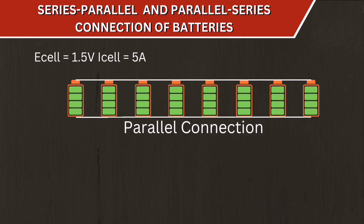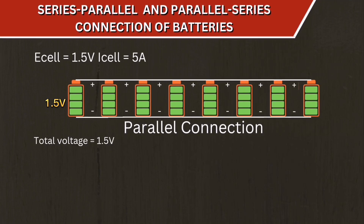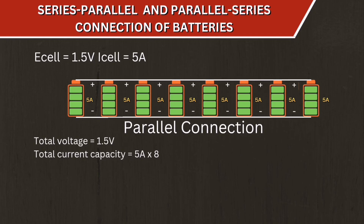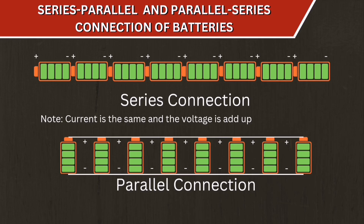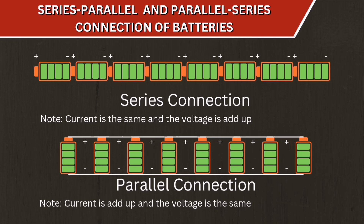The next connection is parallel sources, where all positive terminals are connected together and all negative terminals are connected together. Since it is a parallel connection, the voltage remains 1.5 volts, while the current capacity equals 5 amperes multiplied by 8 sources, resulting in 40 amperes. In summary: for series-connected sources, current is the same and voltage adds up; for parallel-connected sources, current adds up and voltage remains the same.